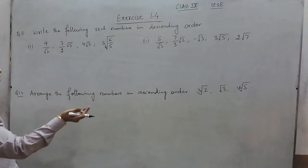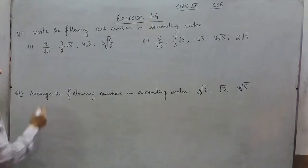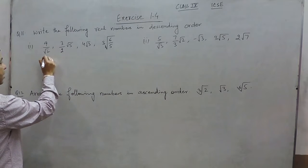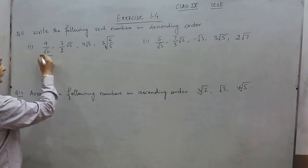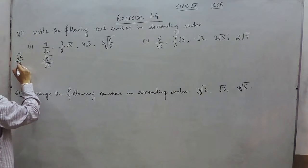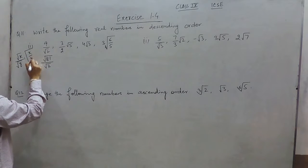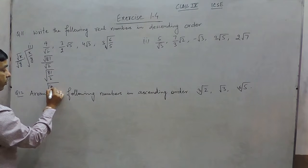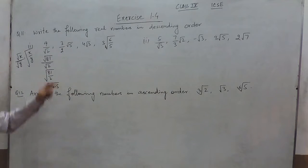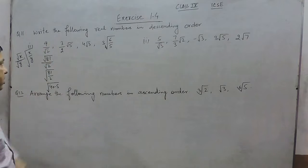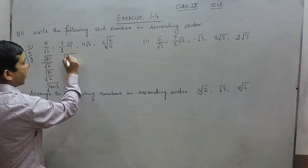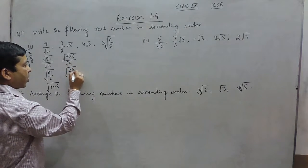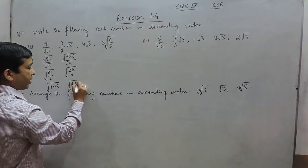9/√2 can be written as √81/√2, and since √x/√y = √(x/y), this becomes √(81/2), which is √40.5. The next number has 9 and 4 under roots, so it can be written as √(9×5)/√4, which equals √45/4, or √11.25.